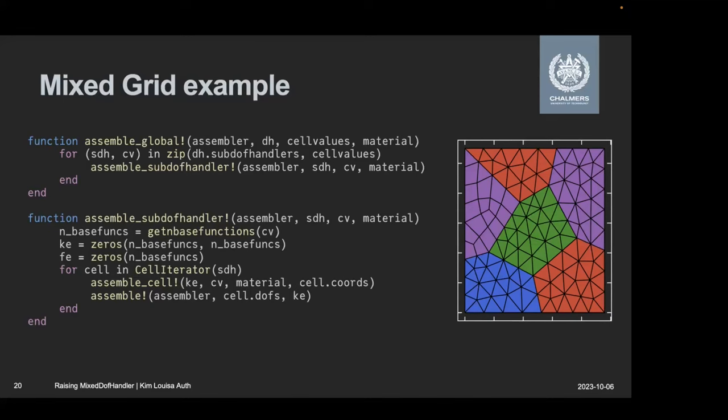So that's why I introduced the second function here, where we have a separate function that goes per subdof handler, because when we go in here, we know the type of the cell values. So we only get one dynamic dispatch per subdomain, and not one per cell, but then the computer does handle the thing with one dispatch per cell pretty fairly well. At least my computer did when I tried to benchmark this.